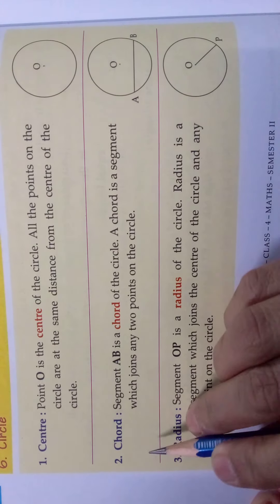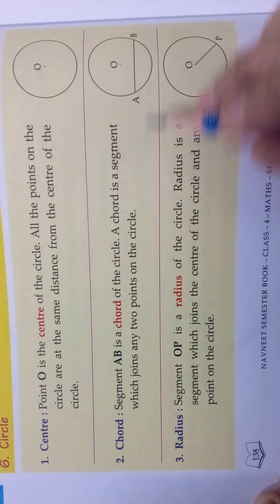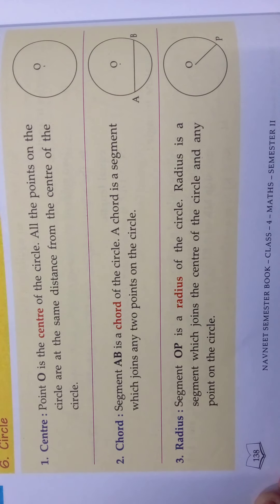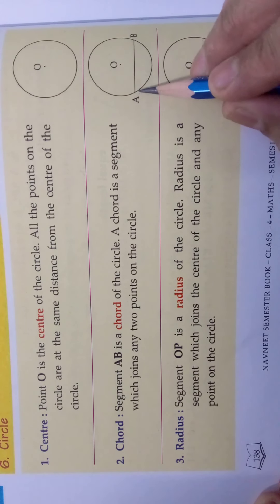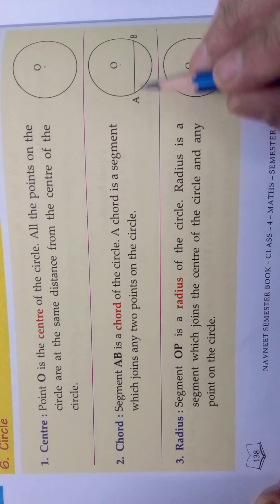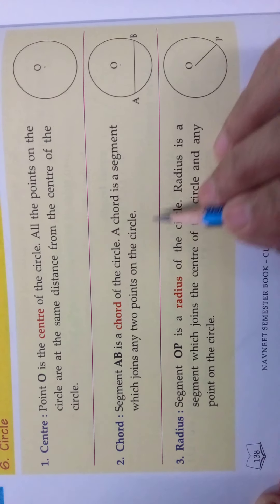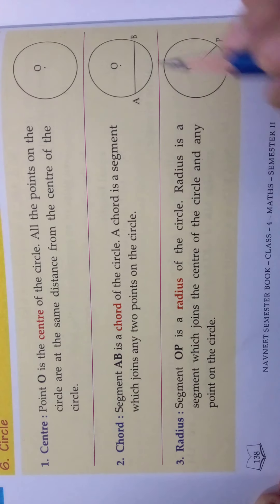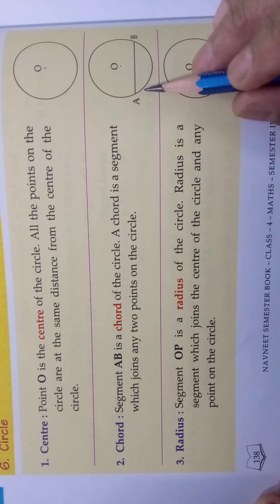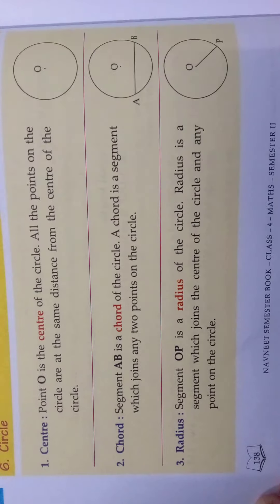Next is chord. What is a chord? Segment AB is the chord of the circle. A line segment has a definite length and two end points — that is A and B here. A chord is a segment that joins any two points on the circle.